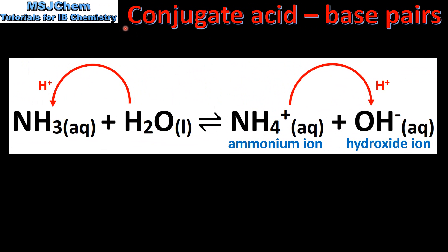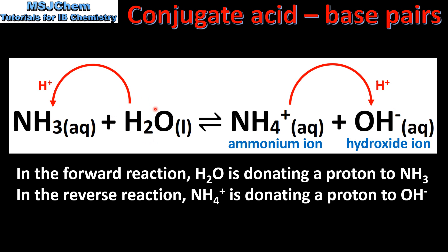Next we look at conjugate acid-base pairs. In this reaction ammonia is reacting with water to form the ammonium ion and the hydroxide ion. In the forward reaction water is donating a proton to ammonia, and in the reverse reaction the ammonium ion is donating a proton to the hydroxide ion. So in the forward reaction water is acting as a Bronsted-Lowry acid and ammonia is acting as a Bronsted-Lowry base. In the reverse reaction the ammonium ion is acting as a Bronsted-Lowry acid and the hydroxide ion is acting as a Bronsted-Lowry base.